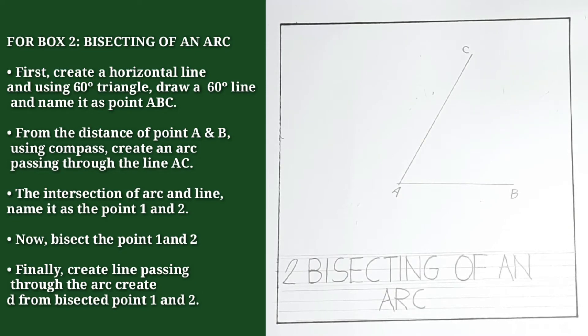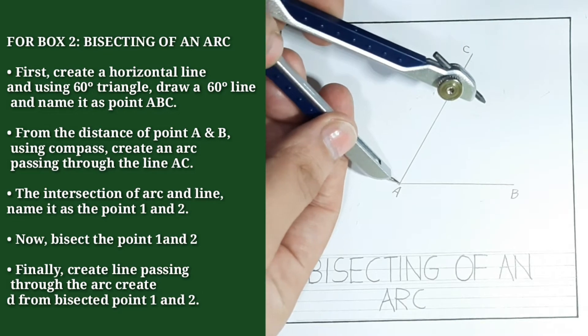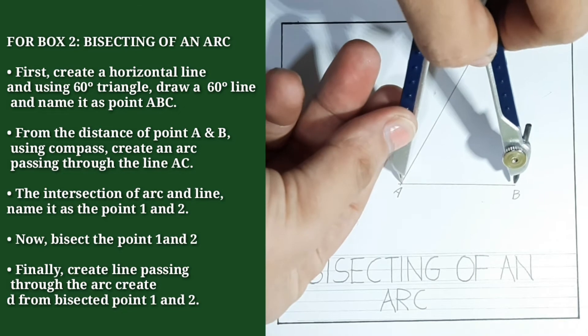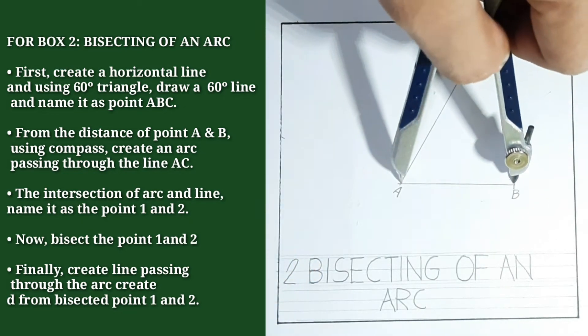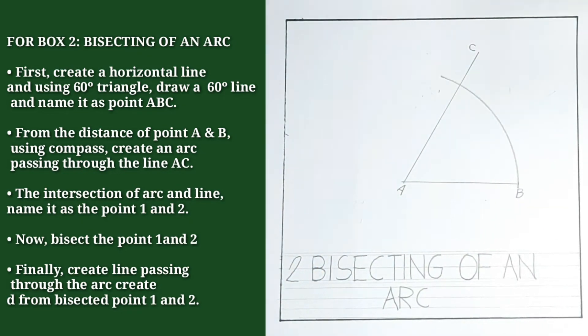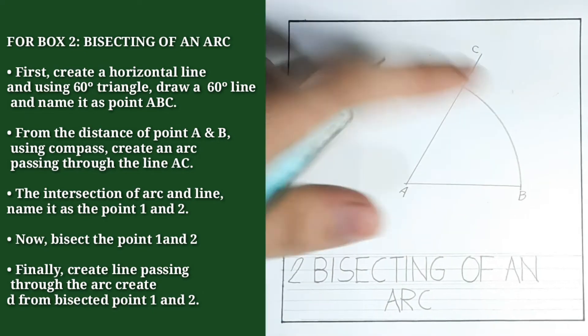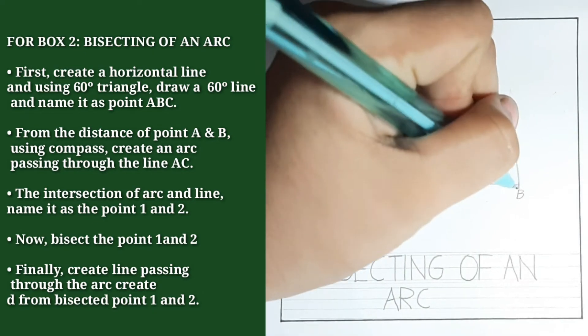By how? We will put the needle of your compass on point A and the pencil point to point B. Then strike an arc. The arc and the line, we will name it by point 1 and point 2.